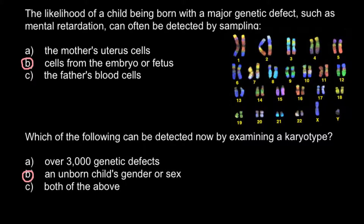However, by studying the karyotype it is very easy to find what the sex is. For example, here you can see one X chromosome and one Y chromosome, which means this individual is going to be a male.